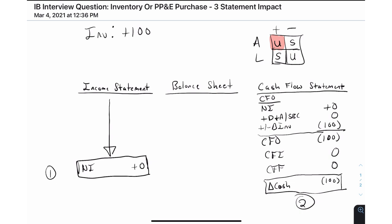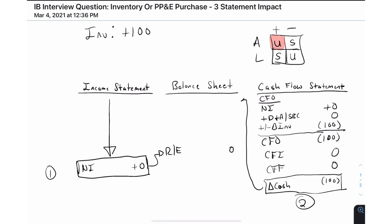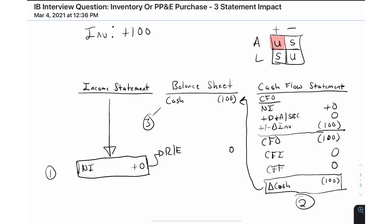Now that we've completed the first two steps, we move to step three: moving net income and cash to the balance sheet. Net income hits the balance sheet under retained earnings — zero impact there. Our change in cash hits the cash balance — that's a negative $100 impact. Step three is really just connecting those two items to the balance sheet.